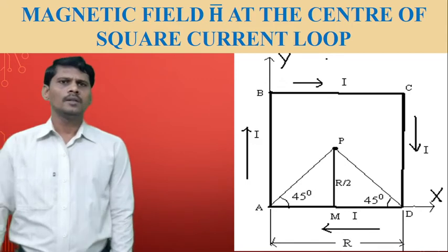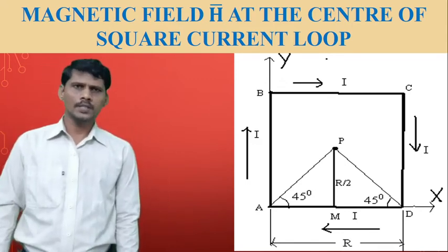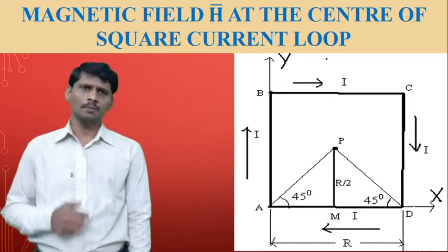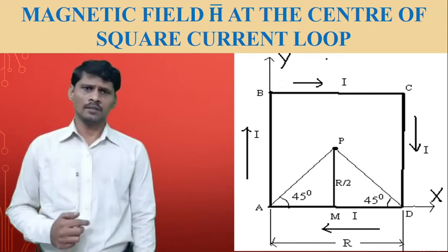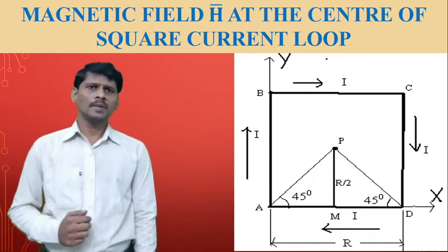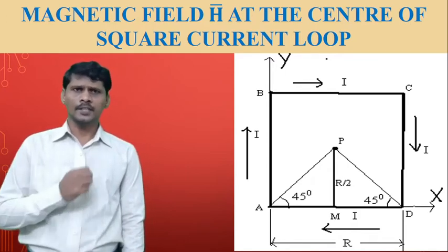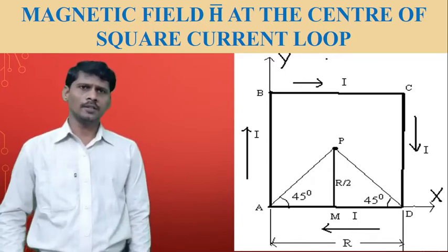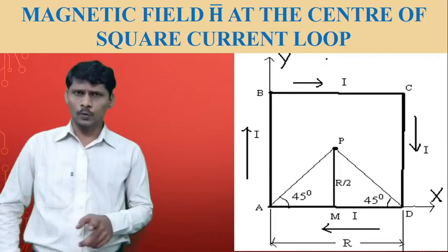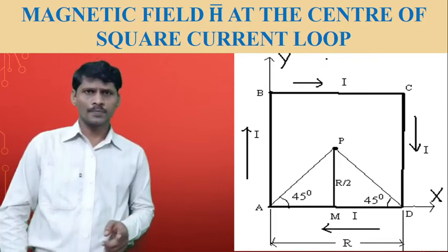Hi everyone. In this video we are going to discuss the next application of the Biot-Savart Law, that is, to calculate the magnetic field intensity and magnetic flux density at the center of a square loop.